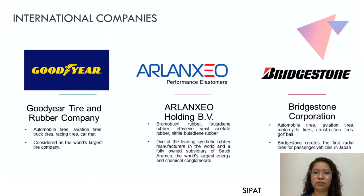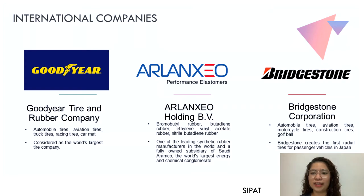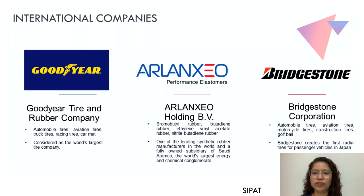Moving on to international companies, first we have Goodyear Tire and Rubber Company, founded in 1898. It became the world's largest tire company in 1916, and produced the first American-made synthetic rubber tire. They also build nylon tires, racing tires, and car mats. Today, Goodyear continues to earn top honors in the rubber and plastics category of Fortune Magazine's list of America's most admired companies, with annual sales of more than 15 billion dollars.